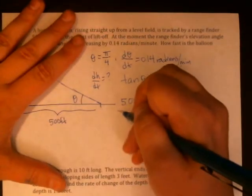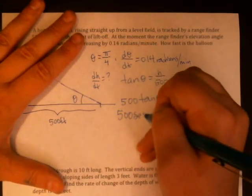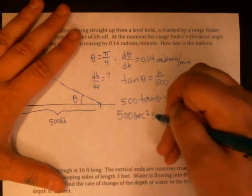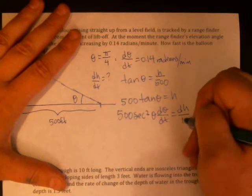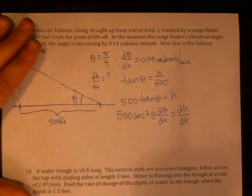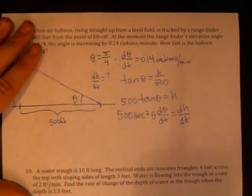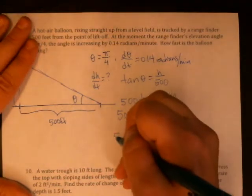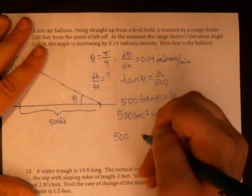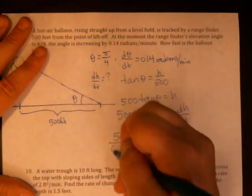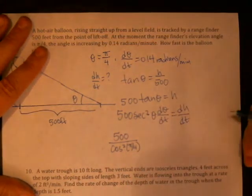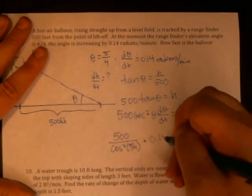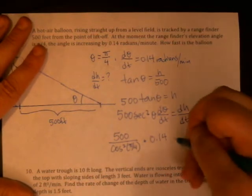If we do, we get 500 secant squared θ dθ/dt equal to dh/dt. And we know that θ is π over 4. I'm going to make this secant into 1 over cosine squared because then I think I can actually figure that out fairly easily. And then this is 0.14 dθ/dt.